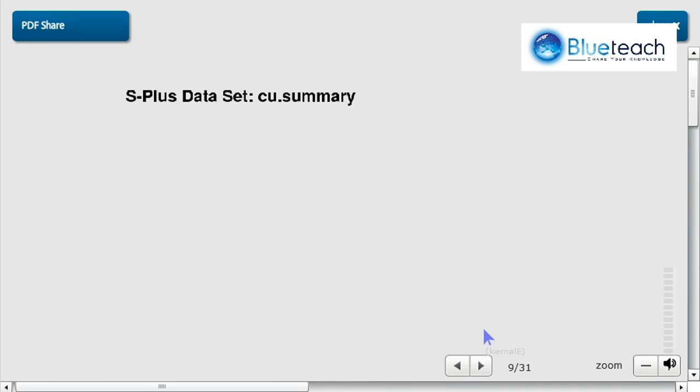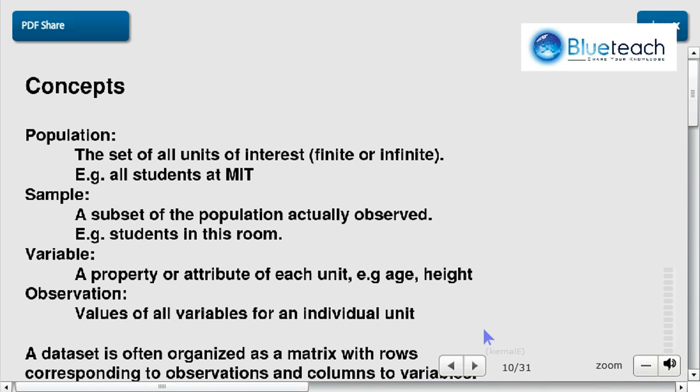Now let's see some more vocabulary for statistics. And actually more than vocabulary, concepts. So we'll start with the population. The population is the set of all units of interest, finite or infinite. For example, all students at MIT. So the population is really the thing you want to observe.